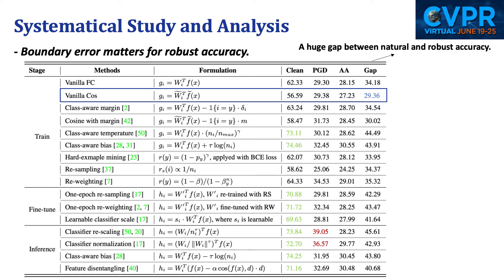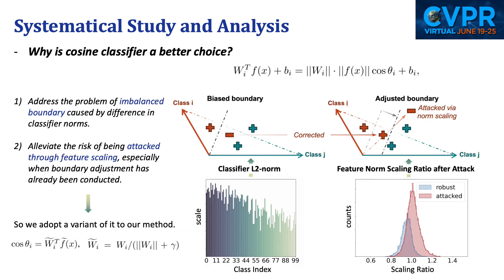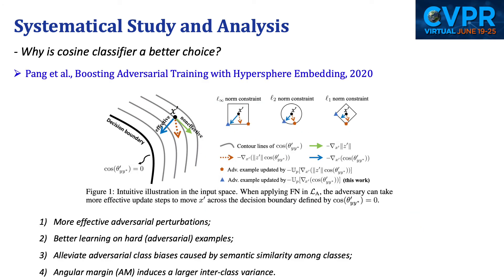Based on the observations above, we found that even if natural accuracy is significantly improved, robustness does not necessarily increase, or the improvement is only minor. In order to get stronger robustness, it is critical to keep a low boundary error, or to maintain a smaller gap between natural and robust accuracy. We found that using a cosine classifier appears to benefit from this, as marked in blue. A scale-invariant classifier removes the effect of feature norm and reduces one degree of freedom, alleviating the problem of unbalanced decision boundary and eliminating the risk of being attacked through feature scaling. A cited paper also gives a detailed analysis of the advantages of the cosine classifier from a different point of view.